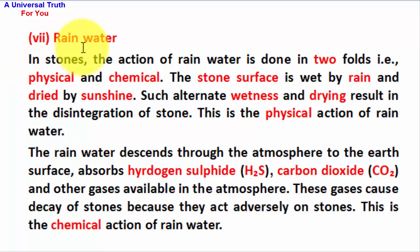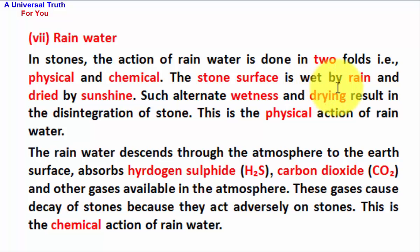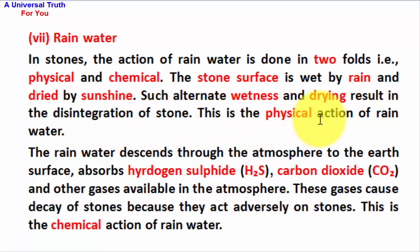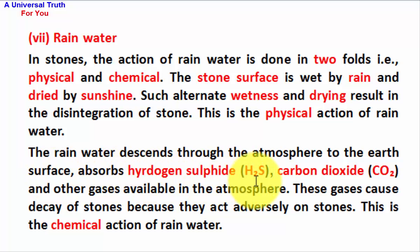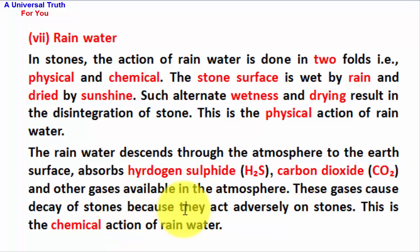Rainwater: The action of rainwater on stones occurs in two folds — physical and chemical. Physically, the stone surface is wet by rain and dried by sunshine; such alternate wetness and drying result in disintegration. Chemically, rainwater descends through the atmosphere and absorbs hydrogen sulphide (H₂S), carbon dioxide (CO₂), and other gases available in the atmosphere. These gases cause decay of stones because they act adversely on stones.